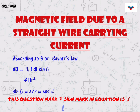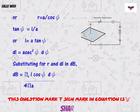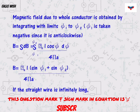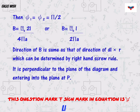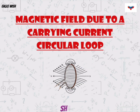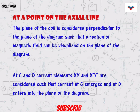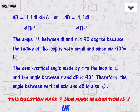After that we will determine the magnetic field due to a straight wire carrying current. We will also determine the magnetic field due to a current-carrying circular loop at the axial line, as well as the center of the loop.